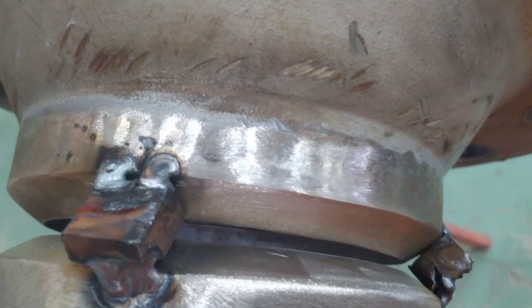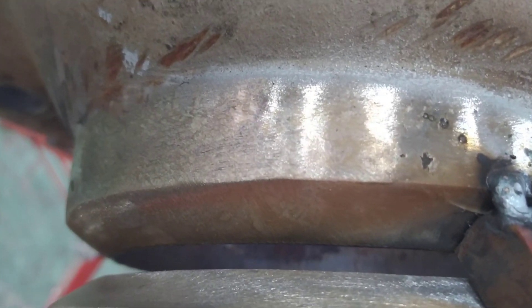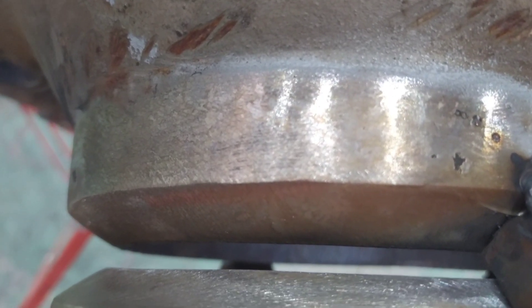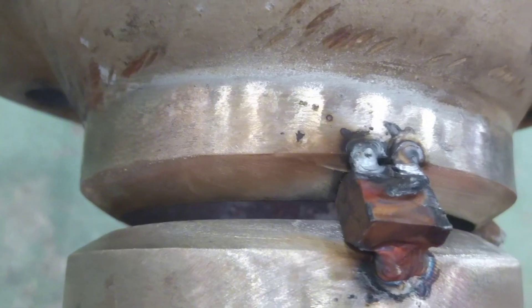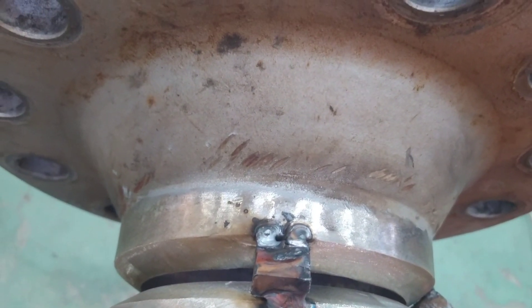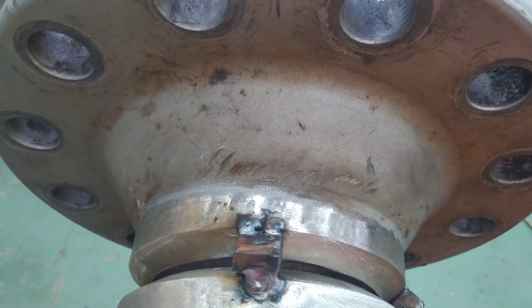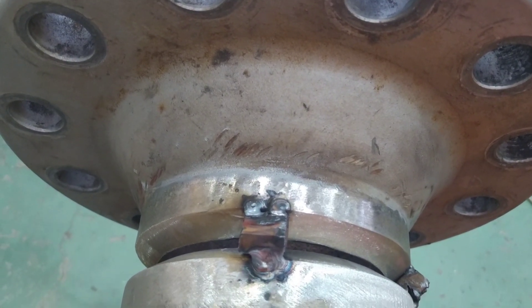During fit-up, gaps are opened between the pipe fittings to be welded, approximately 3-4 millimeters. Having this 3-4 millimeter gap is for better root welding. Depending on the thickness of the wall of the pipe fittings, this 3-4 millimeter gap decreases after welding. Approximately 1-1.5 millimeters remains.